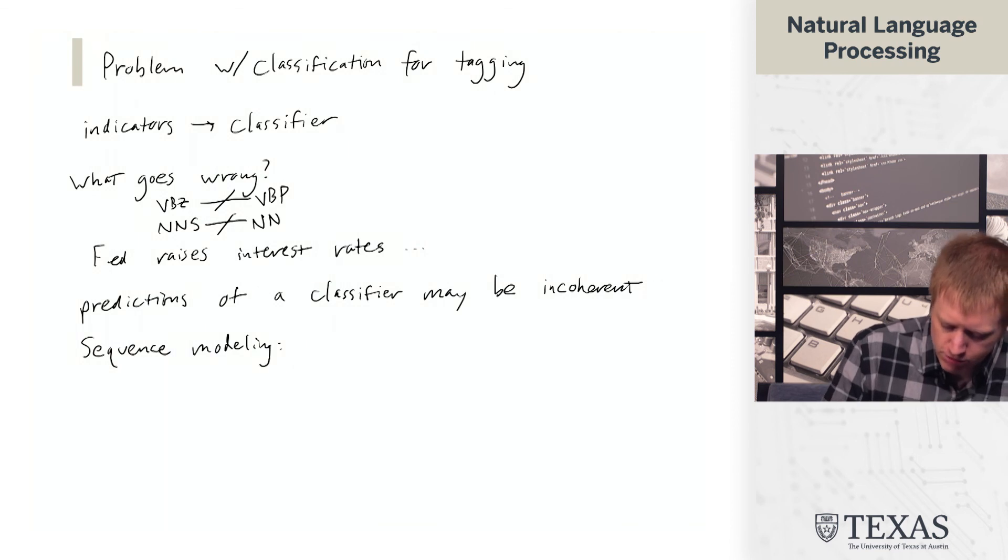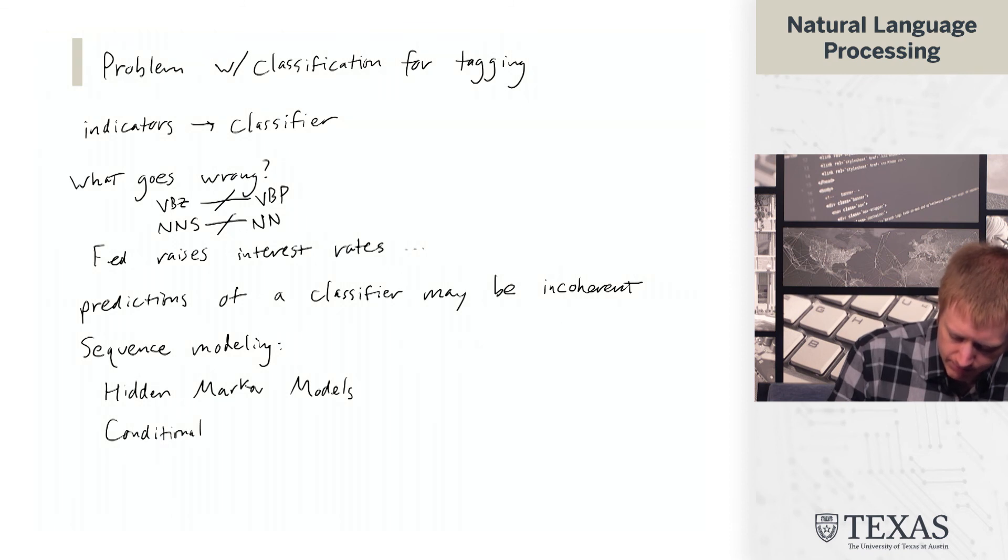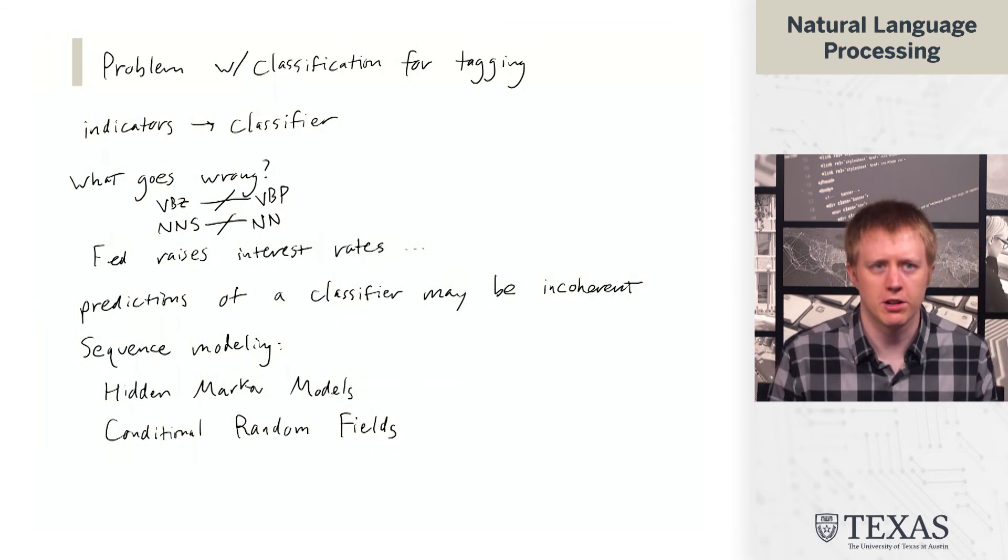And so this is going to lead us into our idea of sequence modeling. And we're going to think about two models: Hidden Markov models and conditional random fields. These are going to be two things that we're going to spend some time unpacking throughout the next section of the class. And essentially, these are going to be two contrasting ideas for how to deal with this. Hidden Markov models are going to be our first example of a generative model. And they're going to look a little bit different from other things we've done, but they have some attractive properties. Conditional random fields are going to look a little bit more like building off of this classifier view of tagging, but making the output predictions coherent.